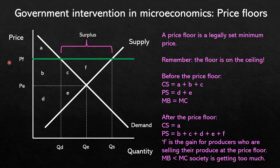The consequences of governments imposing price floors in agricultural markets include: the price floor creates a disequilibrium because quantity supplied is greater than quantity demanded. Before the price floor, consumer surplus — the area above the price and below the demand curve — was A, B, and C, and producer surplus was D and E. That is where your consumer and producer surplus sit at equilibrium.